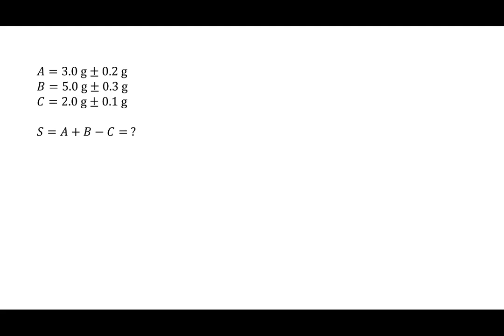So here is a simple example of error propagation using quadrature with adding and subtraction. Here we're given three variables and their uncertainty.